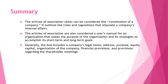Let's summarize what we have discussed. The Articles of Association can be considered the constitution of a company — it outlines the rules and regulations that stipulate a company's internal management affairs. It is also considered as a user's manual for an organization that states the purpose of the organization and its strategies to accomplish both short-term and long-term goals. Generally, the Articles of Association includes the company's legal name, address, purpose, equity capital, organization of the company, financial provisions, and provisions regarding shareholders' meetings.